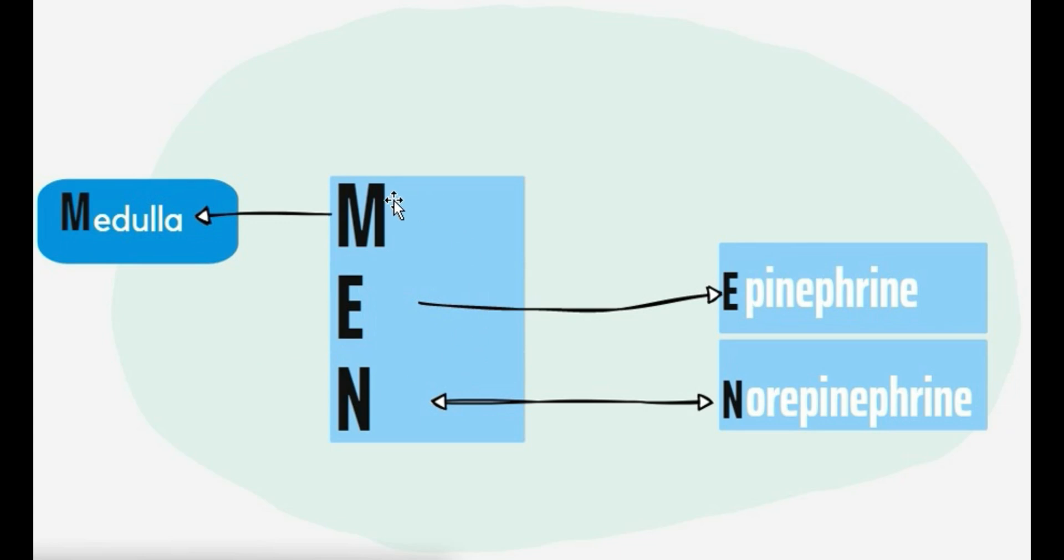M for medulla, E for epinephrine that the medulla excretes, and N for norepinephrine. So two hormones from the medulla: epinephrine and norepinephrine. MEN, remember that.